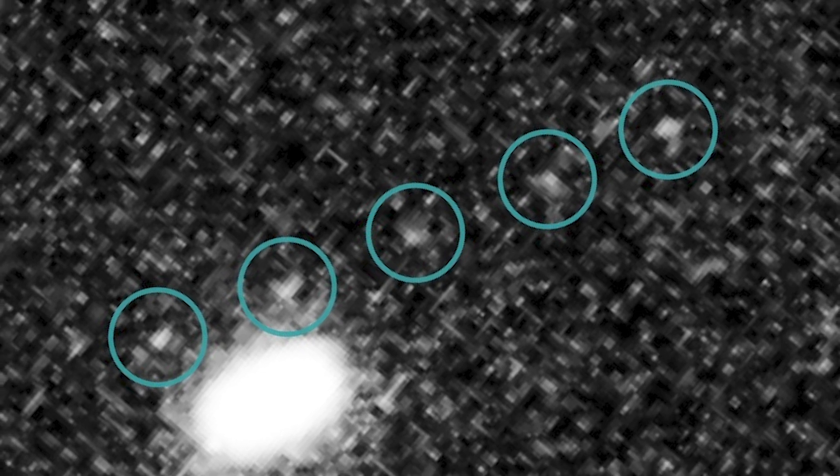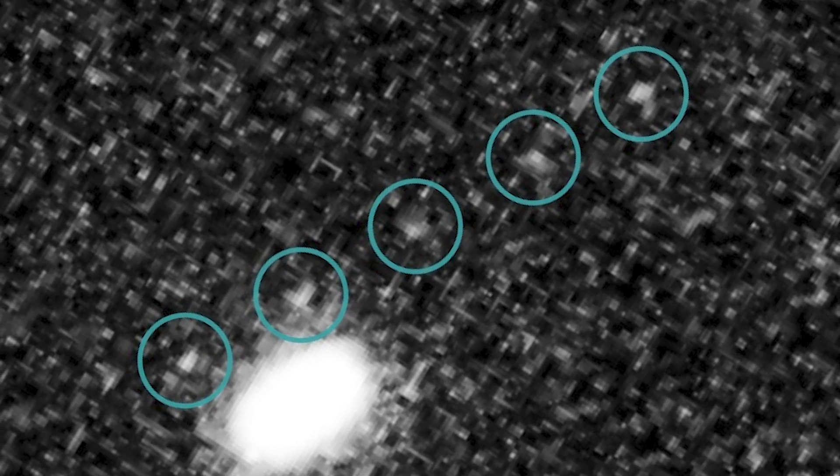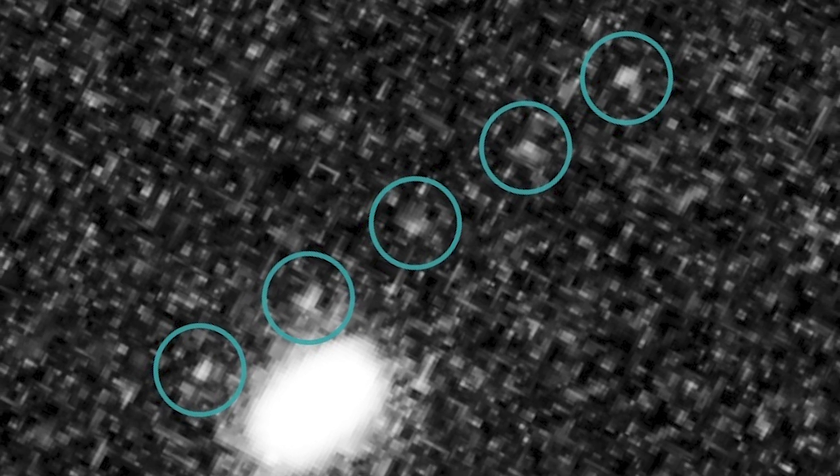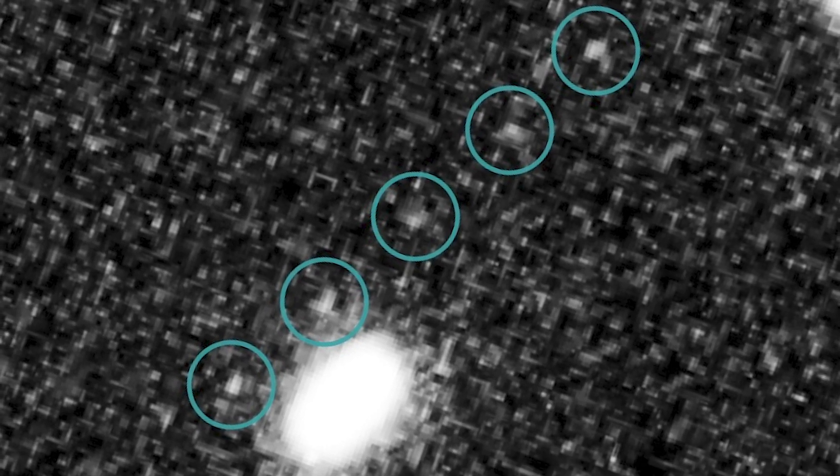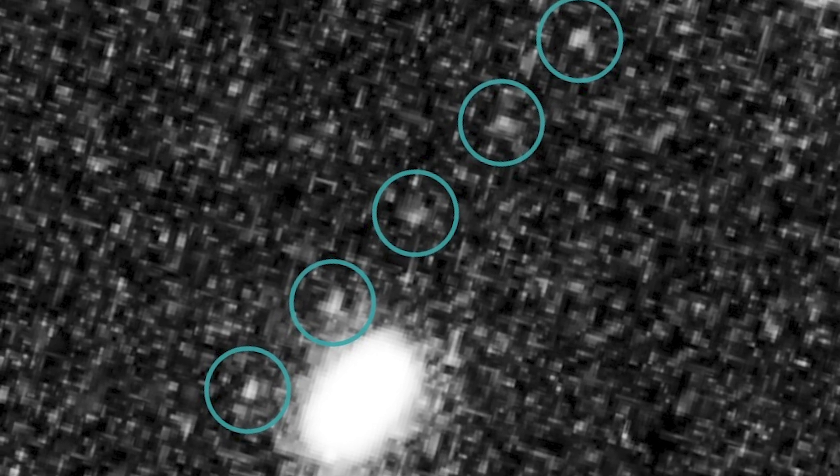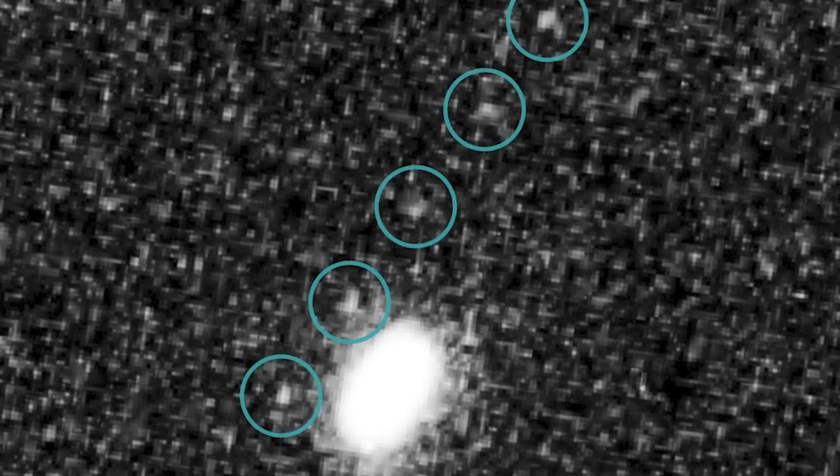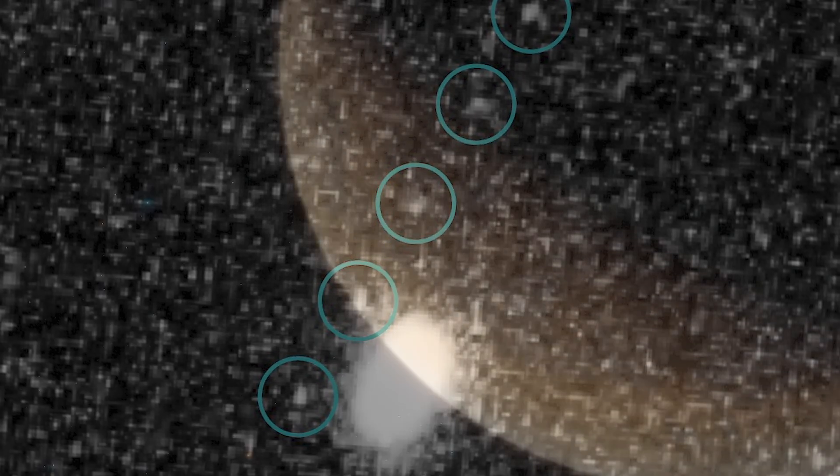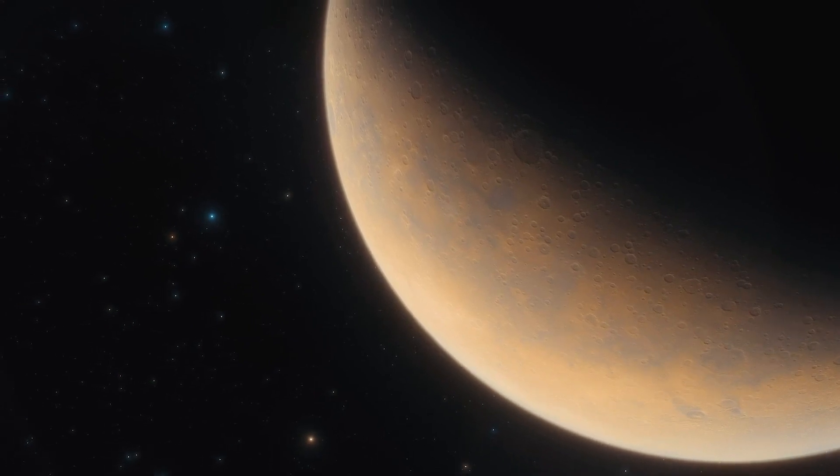The backward orbit and tilted nature of Niku are similar to another mysterious object nicknamed Drac. Motivated by the discovery, several scientists investigated whether objects with similar orbital characteristics were listed in the Minor Planet Center Database. This spreadsheet is filled with information about a thousand small bodies in the entire solar system. The researchers discovered that four other objects had similar retrograde or semi-retrograde orbits and were also tilted.